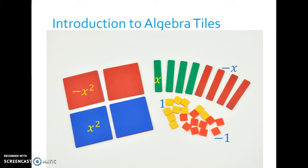The big squares are x-squared blocks, the skinny rectangles are x blocks, and the little squares are one blocks.